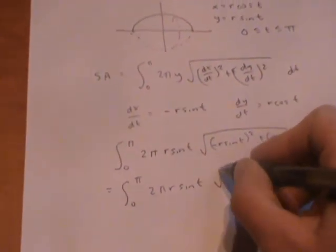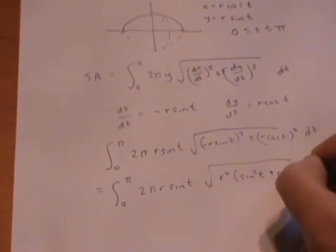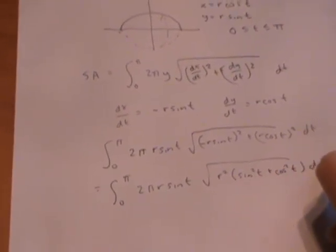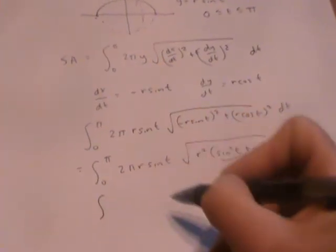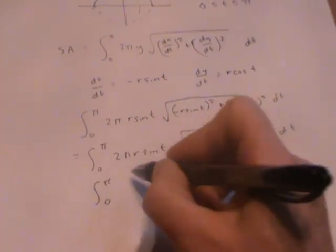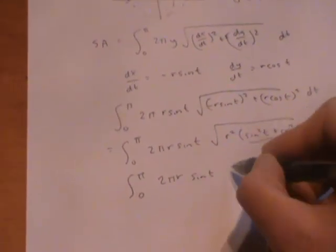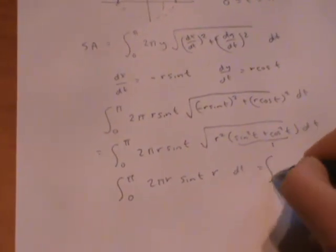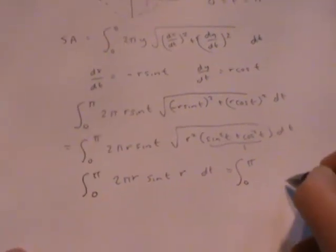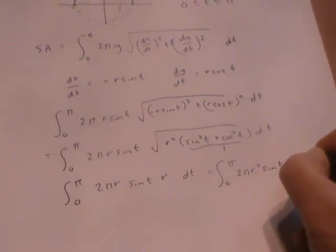Simplifying, I have the square root of r² sin²(t) plus r² cos²(t), which is just r²(sin²(t) + cos²(t)), which is just 1. And so I get the integral from 0 to π of 2πr sin(t) times r dt, which is the integral of 2πr² sin(t) dt.